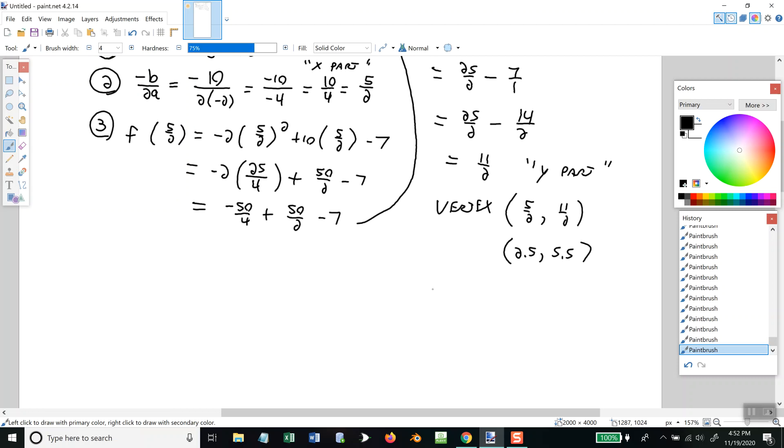Now, I was also asking about our axis of symmetry. And I'll abbreviate that, axis of symmetry. And that's real easy. It's of the form x equals, and then whatever the x part of your vertex is. So, x = 5/2.